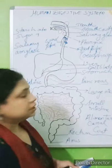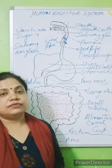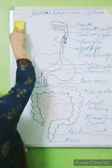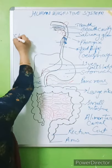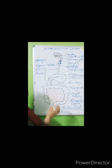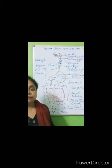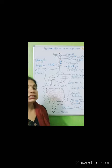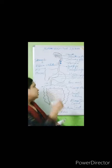In the stomach, there are tubular gastric glands present which secrete gastric juice. The stomach produces three gastric juices: pepsin, HCl, and mucus. Pepsin breaks proteins into peptones. HCl makes the medium acidic, and its main function is to kill bacteria present in our food. Mucus protects the inner wall of the stomach.